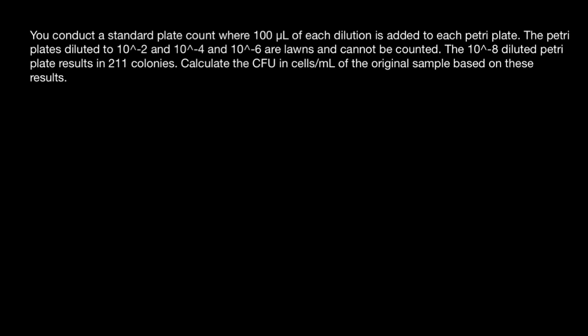So here's a problem. You conduct a standard plate count where 100 microliters of each dilution is added to each Petri plate. The Petri plates diluted to 10^-2 and 10^-4 and 10^-6 are lawns and cannot be counted. The 10^-8 diluted Petri plate results in 211 colonies. Calculate the CFU in cells per milliliter of the original sample based on these results.